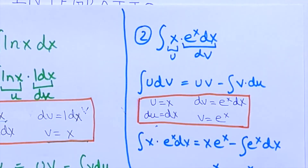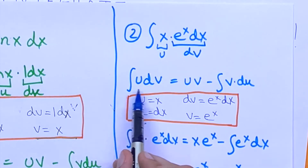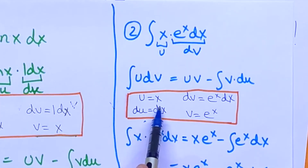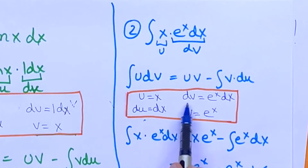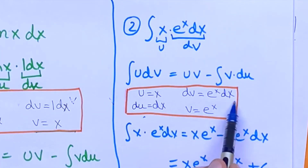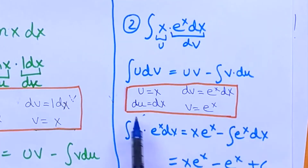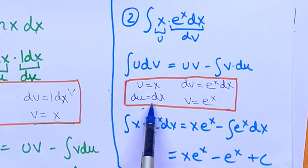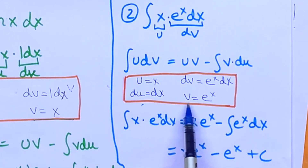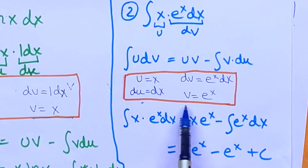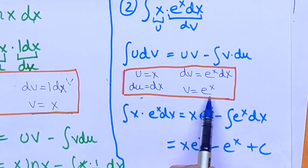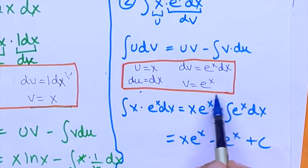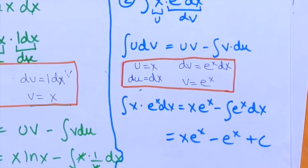The second example is the integral of x times e to the power x dx. We use the same formula. This time we take u as x and dv as e to the power x dx. Differentiating both sides we get du equal to dx, and integrating both sides we get v equal to e to the power x, because the integral of e to the power x dx is just e to the power x.